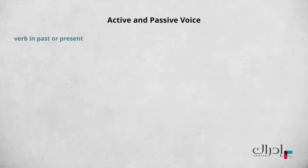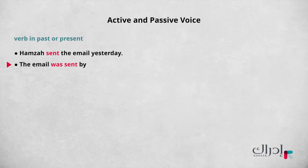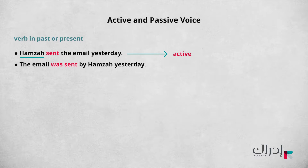Take a look at these two sentences. For example: Hamza sent the email yesterday. The email was sent by Hamza yesterday. The first sentence is active — Hamza is the subject and he did the action. The second sentence is passive. Hamza still did the action, but he is at the end of the sentence.